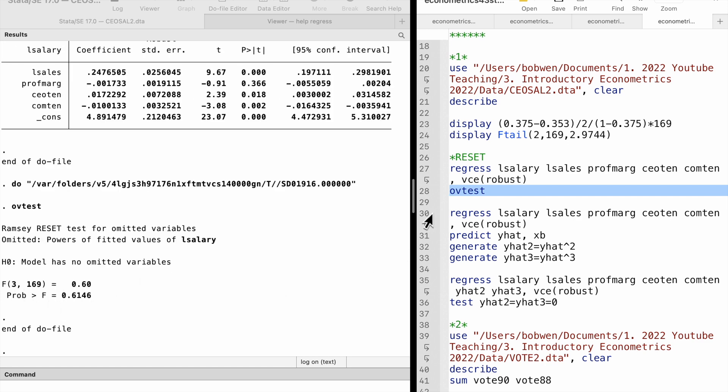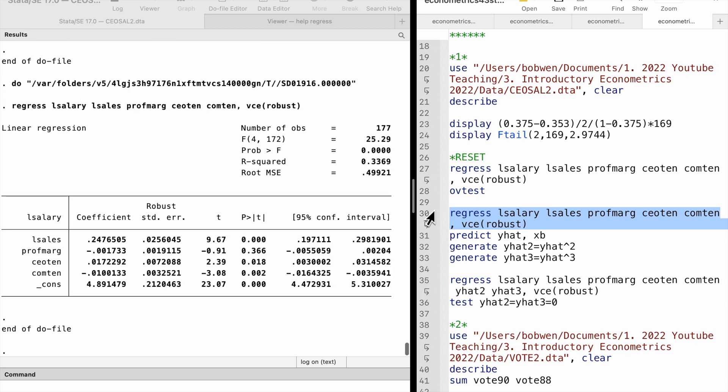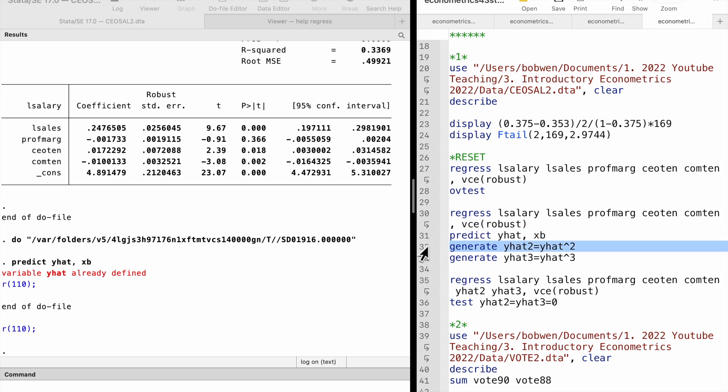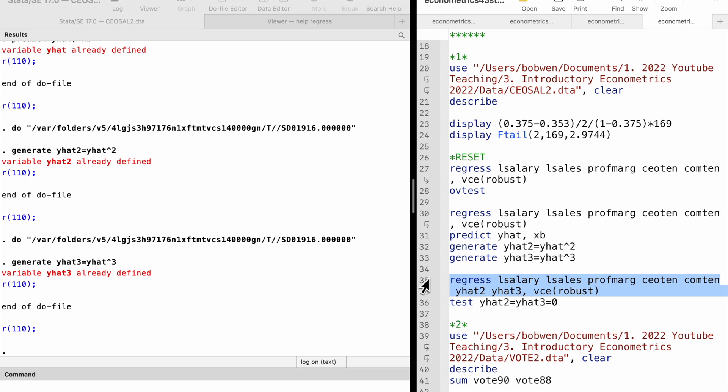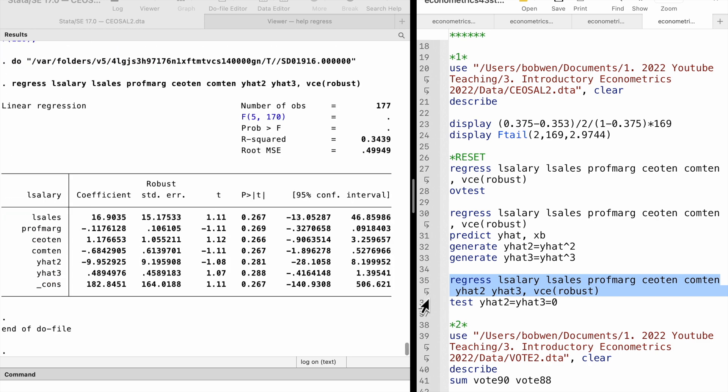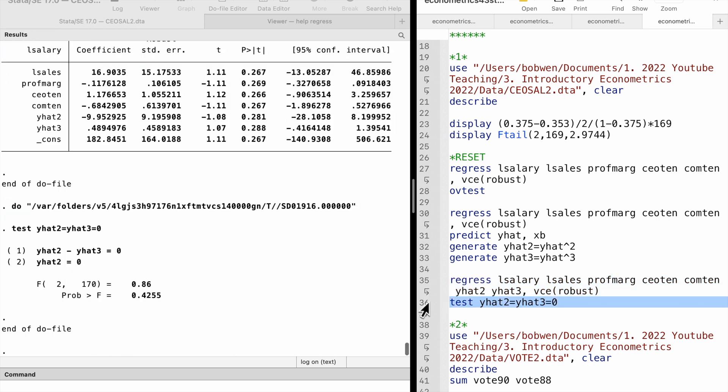Or we could do it manually. We obtain the fitted values and generate their squared and cubic terms. Then we add these polynomials to the original regression. Finally, we do the F-test for the significance of the polynomials in the expanded model.